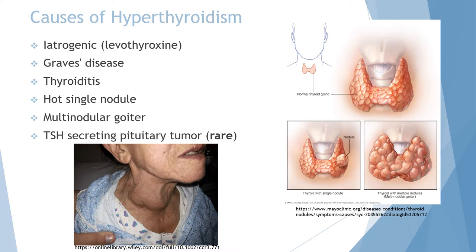Lastly, and rarely, a pituitary tumor can form within the brain, which may constantly produce TSH, or thyroid-stimulating hormone.